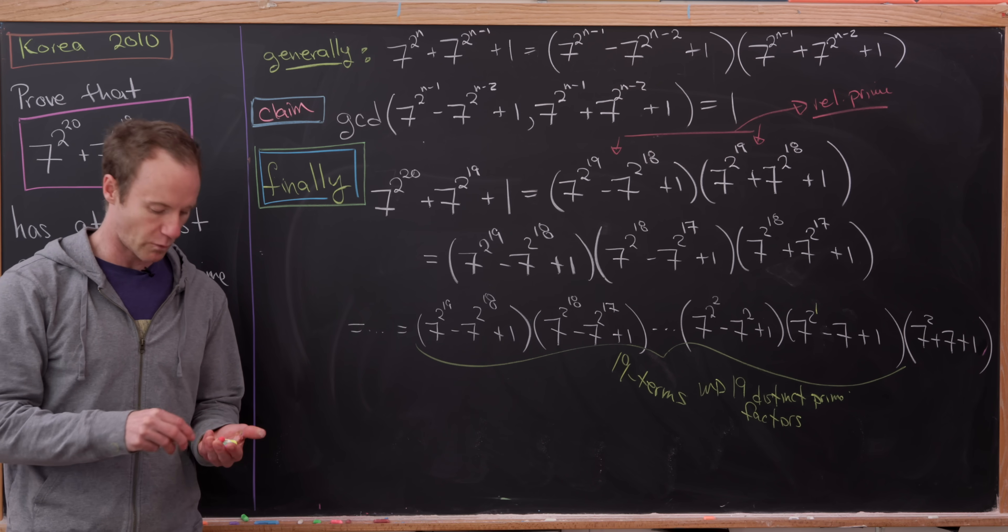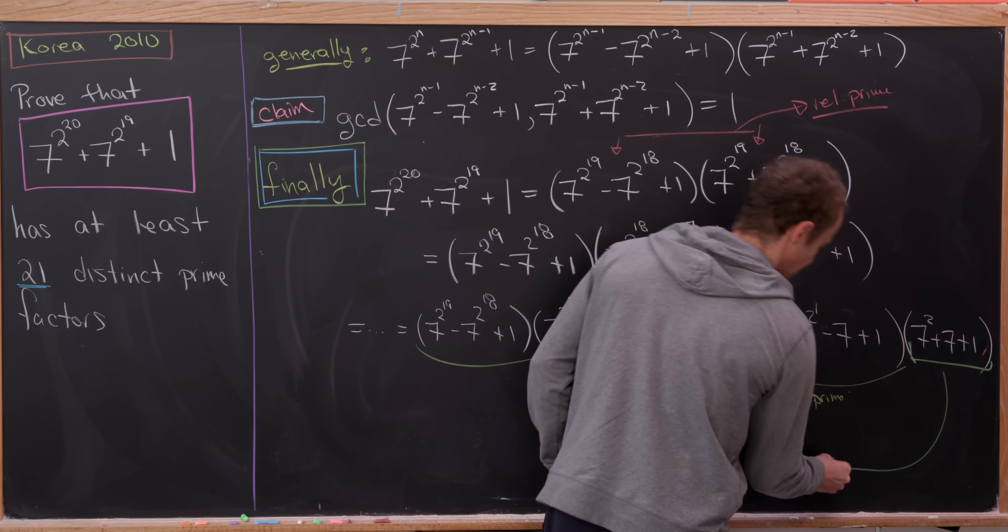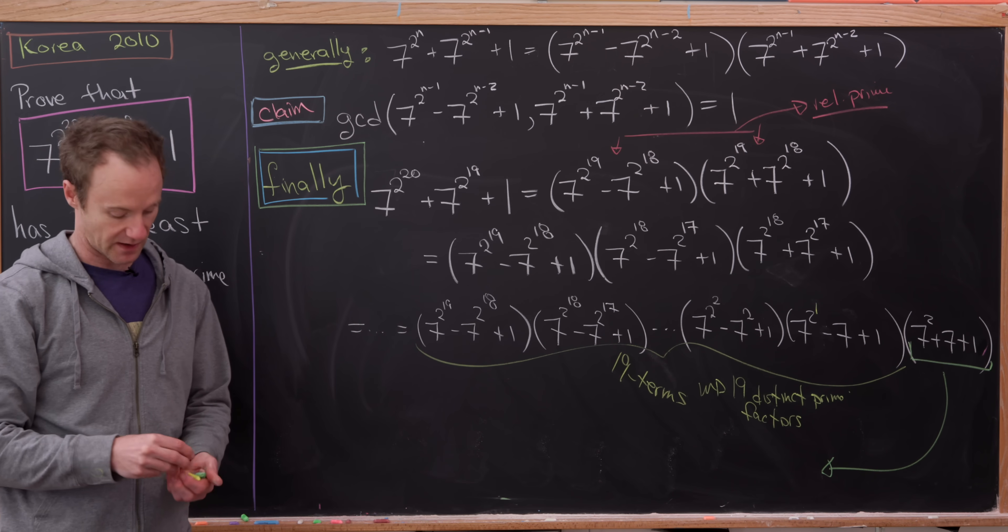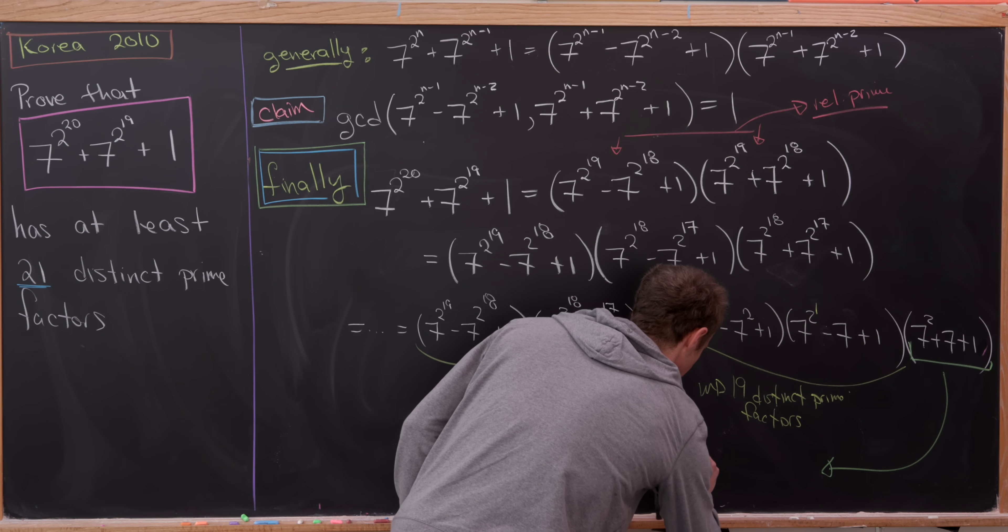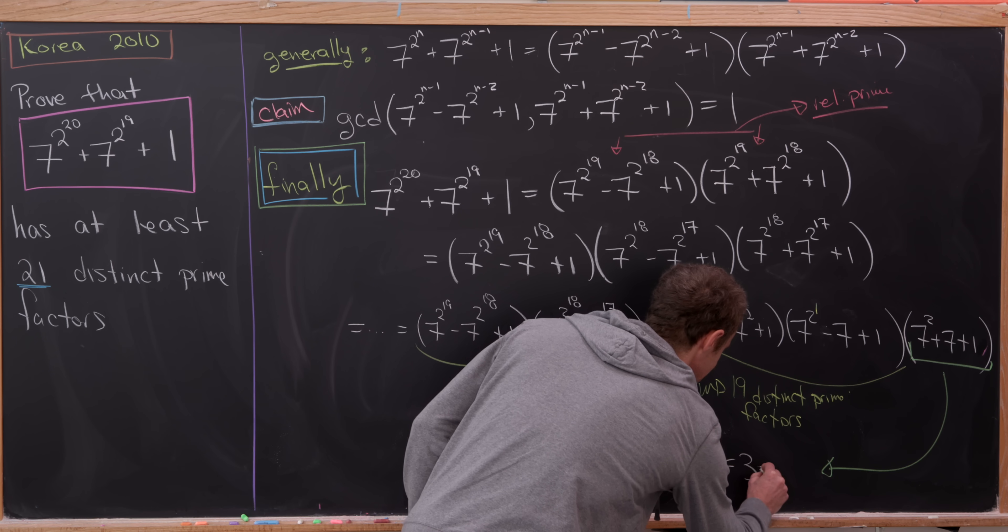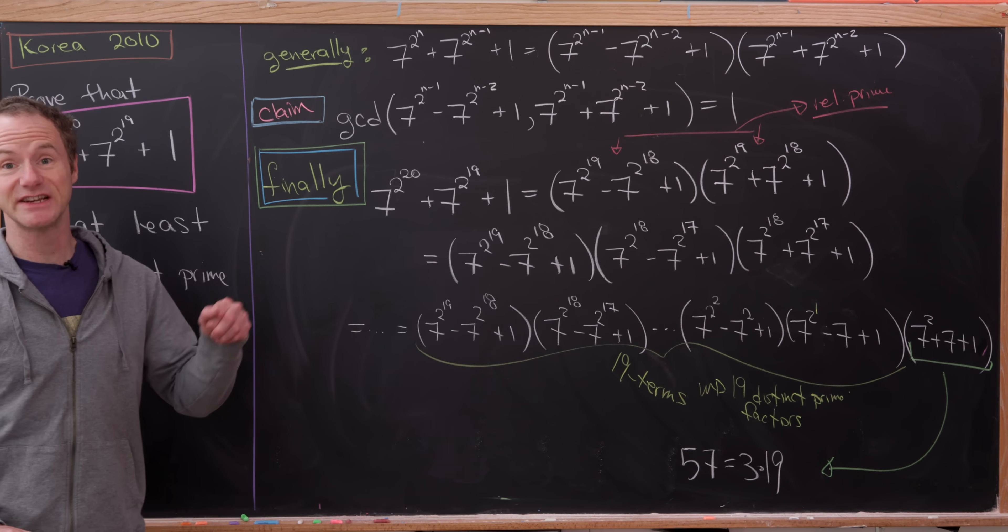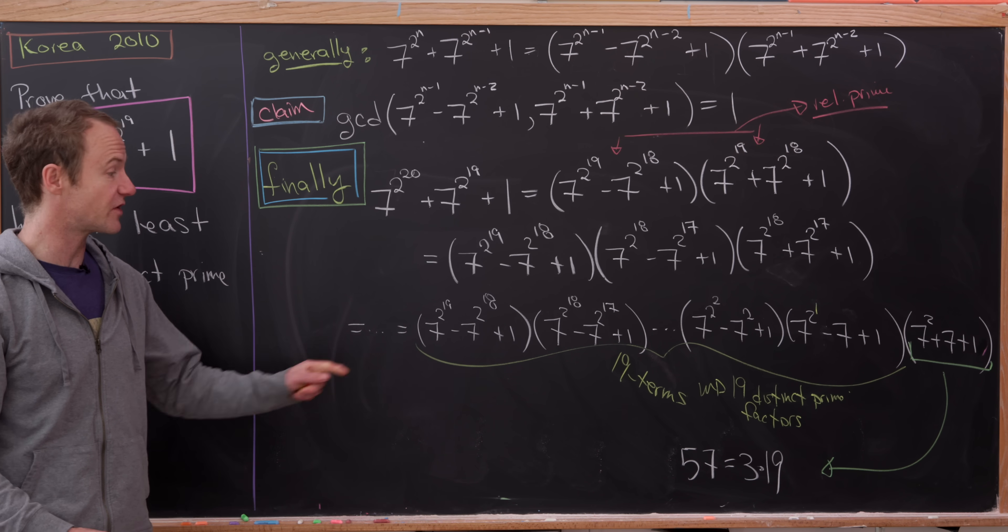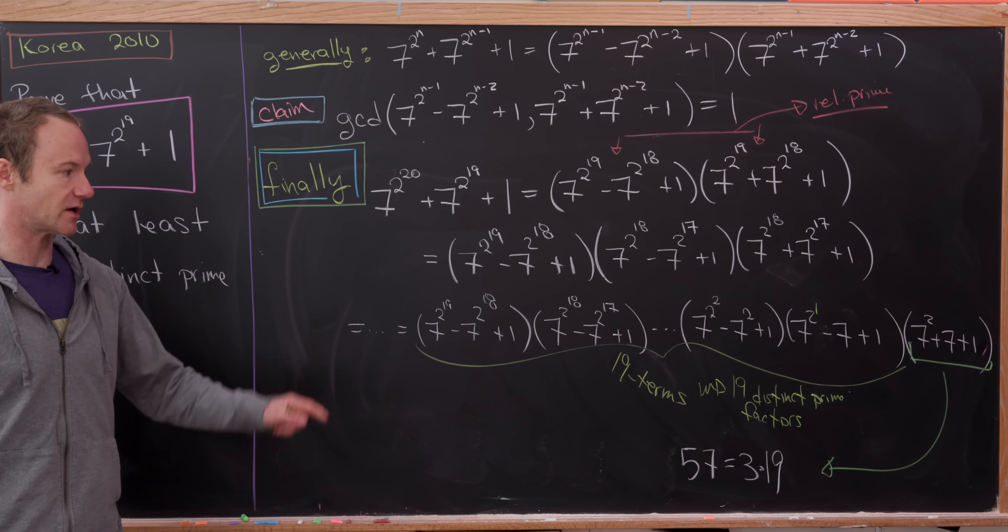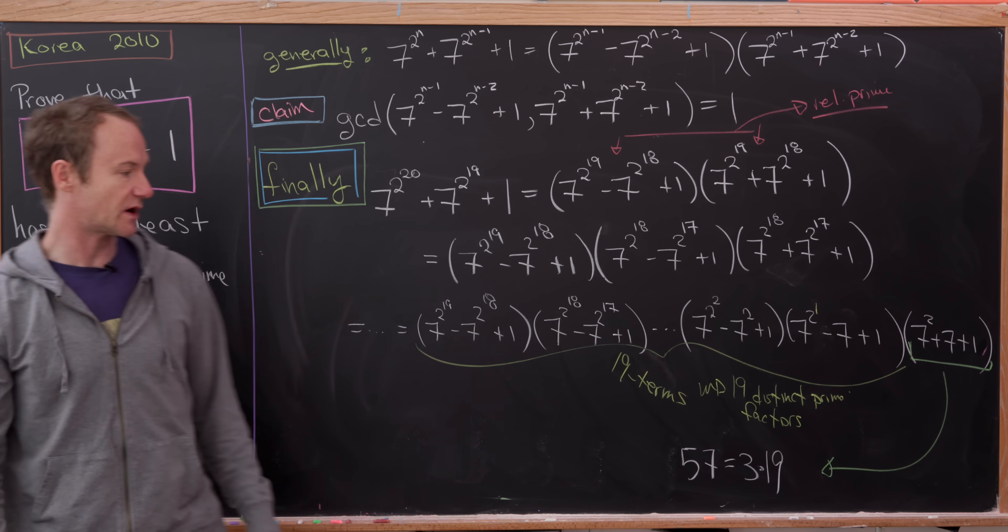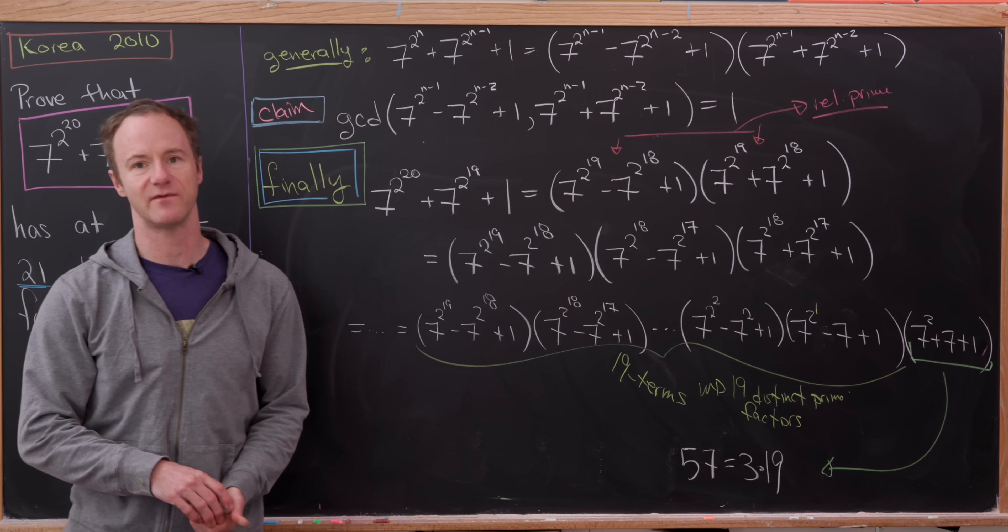But then you might say, where do the other 2 prime factors come from? Well, they come from this last term right here, which is 7 squared, 49, plus 7 plus 1, which is 57. But note that we can divide 57 as 3 times 19, giving us an additional 2 prime factors. And we know that they're distinct from the above prime factors, again, because of our claim right here. So since 19 plus 2 is equal to 21, we have it. We've counted up at least 21 distinct prime factors.